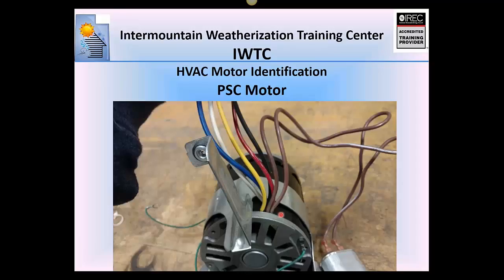Here's a picture of a PSC motor showing all the leads. There's the capacitor with two wires — brown and brown-and-white. There are four speed leads: black, red, yellow, blue, plus a common lead and a ground. Typically black is low, red is high, yellow is medium-low, and blue is medium-high.